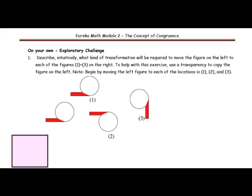In this exploratory challenge, we want to describe intuitively what kind of transformation will be required to move the figure on the left to each of the figures 1, 2, and 3 on the right. To help with this exercise, use the transparency to copy the figure on the left. Begin by moving the left figure to each of the locations 1, 2, and 3. So, again, we want to describe intuitively what kind of a transformation we are going to be using. So, the first thing that I want to do is I want to take my transparency paper and I want to put it over the figure, and I want to trace that figure.